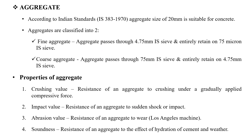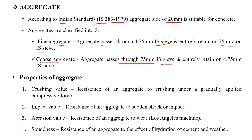The next topic is aggregate, as per IS 383-1970. We use aggregate of size 20 mm in concrete. There are two types: fine aggregate and coarse aggregate. Fine aggregate passes through a 4.75 mm IS sieve and is retained on a 75 micron IS sieve. Coarse aggregate is retained on the 4.75 mm IS sieve.